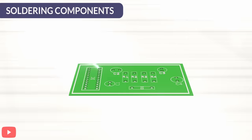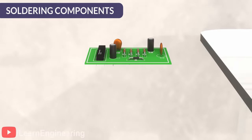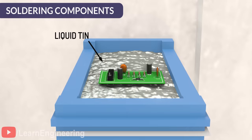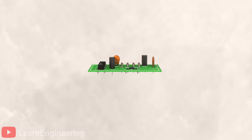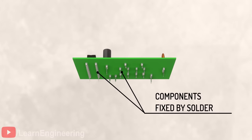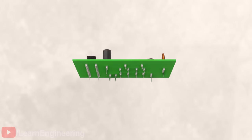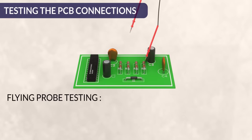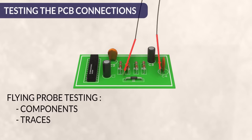In the industries, the components are then placed and soldered using liquid tin. This process affixes the components to the copper pads on board. Next, final flying probe testing is done to check the connectivity between all the components, traces, and pads.